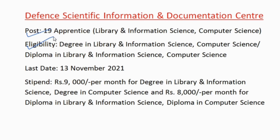Last Date for Application: 13 November 2021. Stipend: 9,000 rupees per month for Degree in Library and Information Science or Degree in Computer Science. 8,000 rupees per month for Diploma in Library and Information Science.